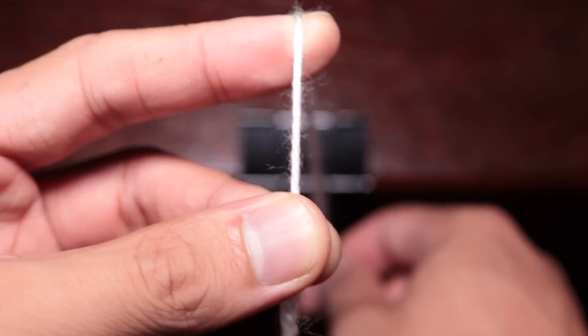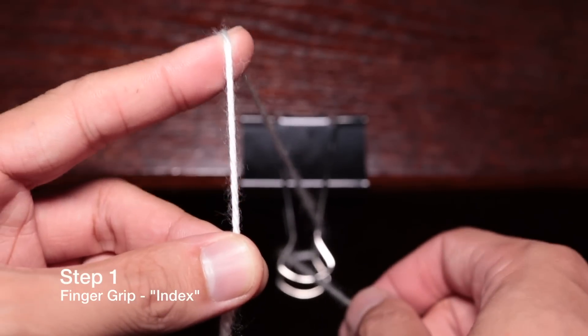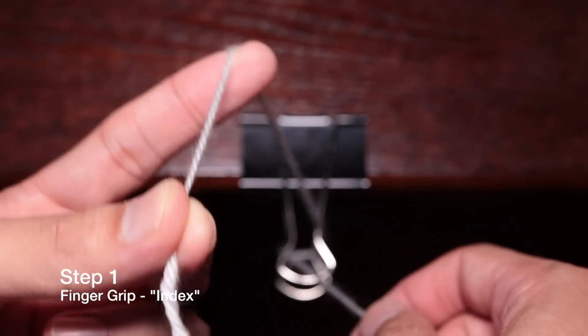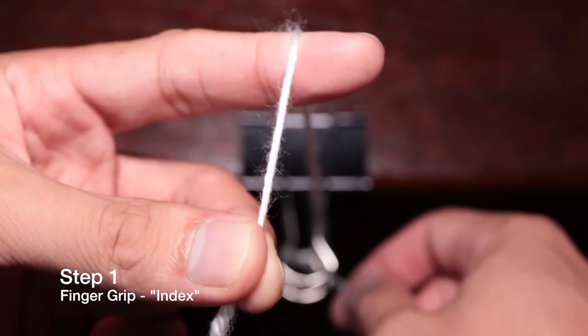This is going to be the grip: holding the string in between the middle finger and the thumb and then the index finger just underneath it making some tension like that. This is the first type of knot out of two.